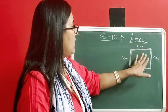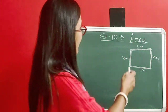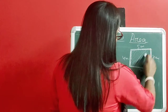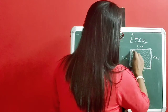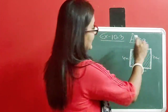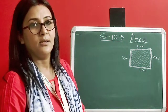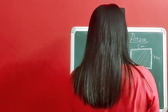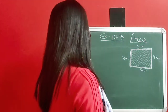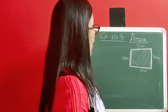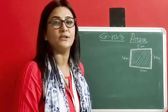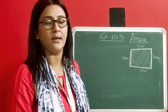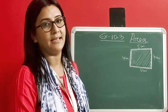If I want to cover this figure with a carpet, we would cover the inner surface. The measurement of this inner surface gives us the area. So, area is the amount of surface enclosed by a closed figure. There are certain formulas to find area for different types of figures — a different formula for a rectangle and a different formula for a square.